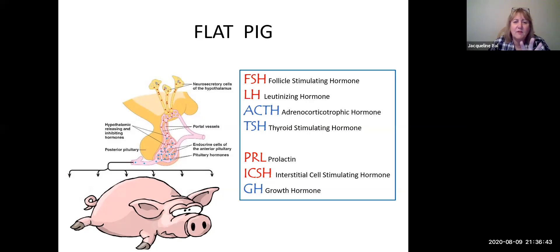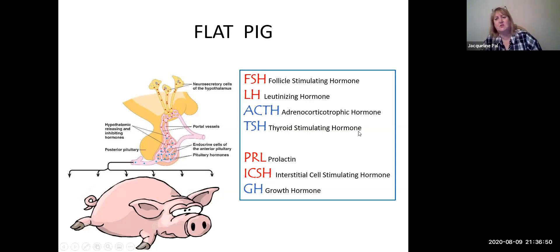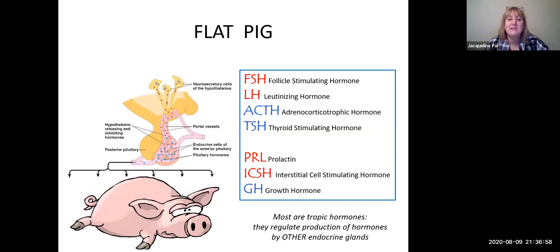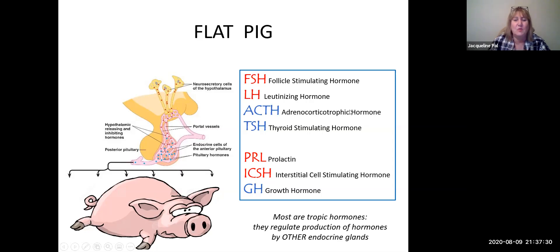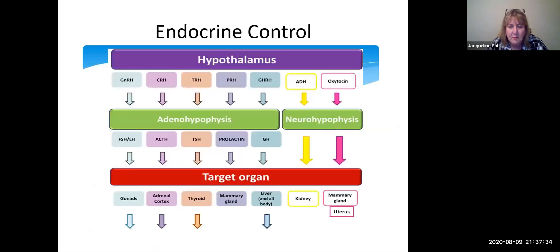Looking at these hormones, TSH stands for Thyroid Stimulating Hormone — if I ask what it does, you'd correctly say it stimulates the thyroid. This is an example of what we call a tropic hormone. Most of these seven hormones are tropic hormones, meaning they regulate production of hormones by other endocrine glands. TSH tells the thyroid gland whether or not to secrete its own hormones. Any hormone with 'stimulating' in the name, or the word 'tropic,' is a tropic hormone.